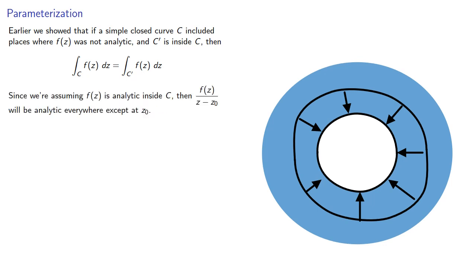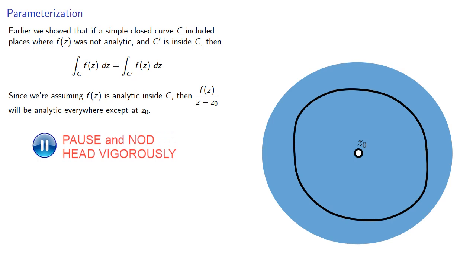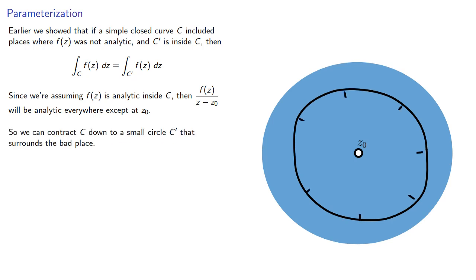Since we're assuming that f of z is analytic inside C, then f of z over z minus z0 will be analytic everywhere except at z0. So we can contract our curve C down to a small circle C' that surrounds the bad place.